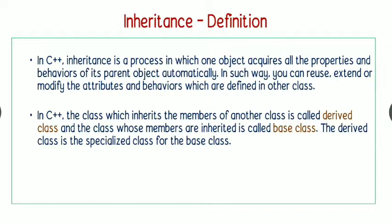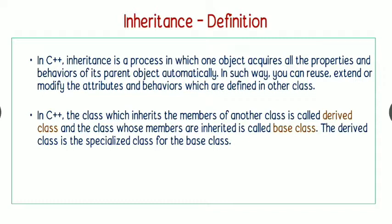When you want to use a particular class's features in another class — that is, if you want to extend the features of another class — then we may be in need of inheritance. Inheritance is a process in which one object acquires all the properties and behaviors of another object automatically. In this way you can reuse, extend, or modify the attributes and behaviors which are defined in another class.